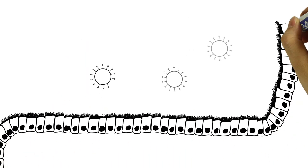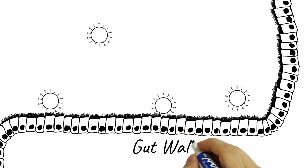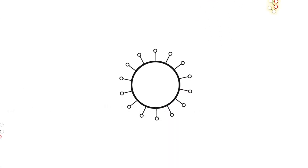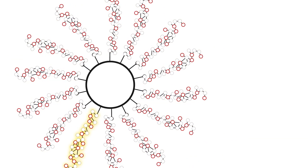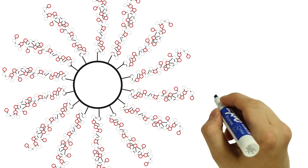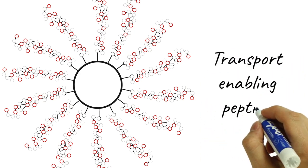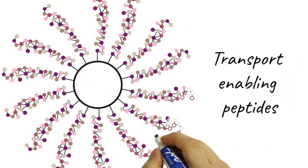Nanoparticles are normally unable to cross the intestinal epithelium, but when we attach special compounds to the surface of nanoparticle carriers, they're able to cross the gut wall. These identified compounds are called transport-enabling peptides and have the ability to move across the intestinal wall.